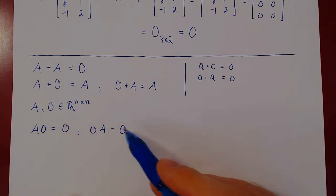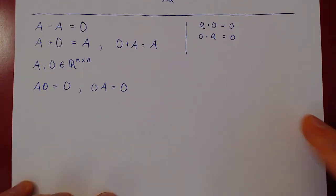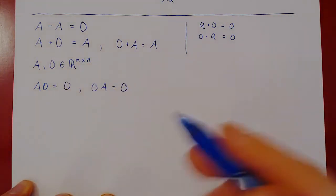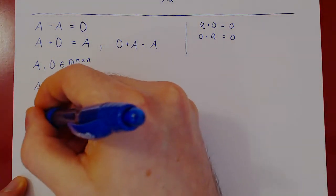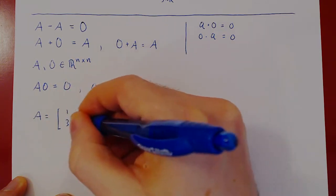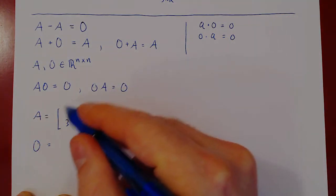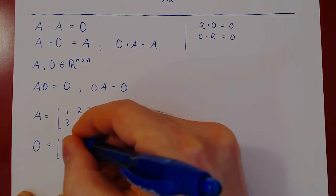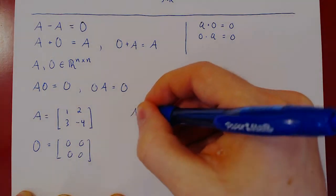Let's just check this quickly and you'll see that again this is fairly obvious. Let's take, say, just two by two matrices. So suppose A was one, two, three, negative four, and here again zero will inherit the same size as A, so it will be the zero two by two matrix. And if you do A times zero,